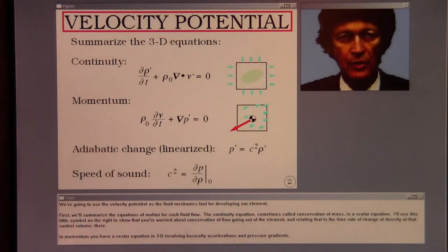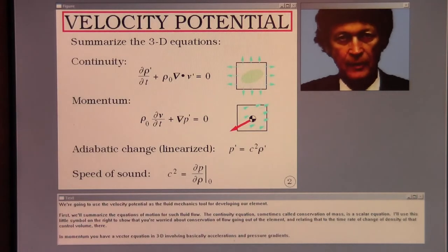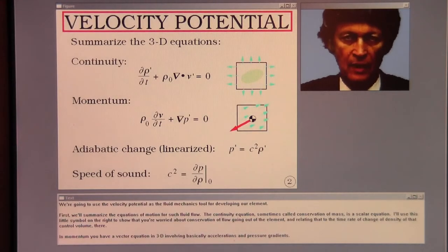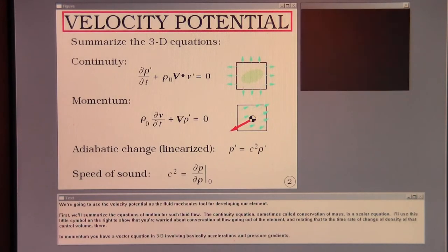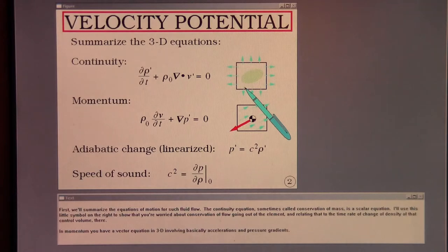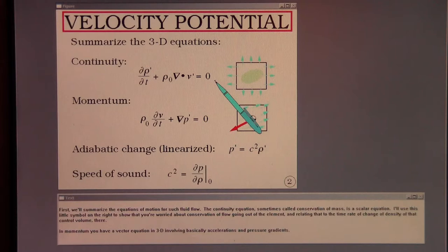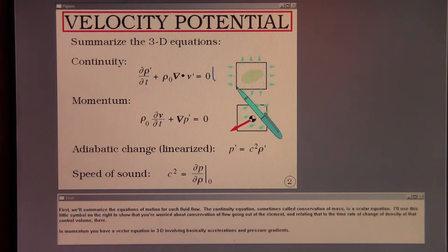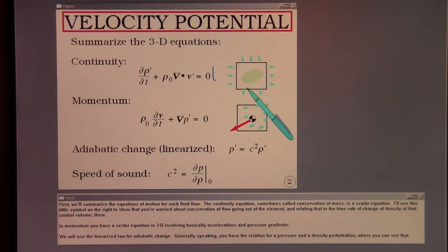We're going to use the velocity potential as the fluid mechanics tool for developing our element. First, we'll summarize the equations of motion for such a fluid flow. The continuity equation, sometimes called conservation of mass, is a scalar equation. It relates the flow going out of the element to the time rate of change of density of that control volume.